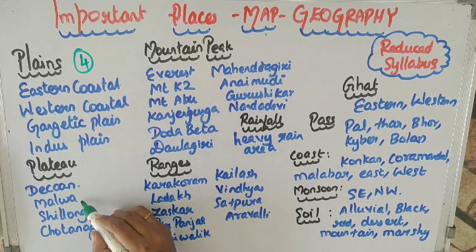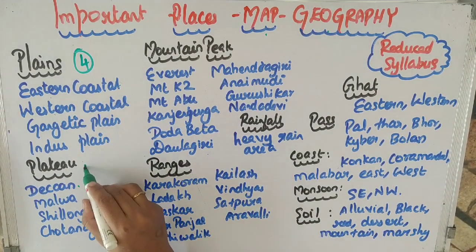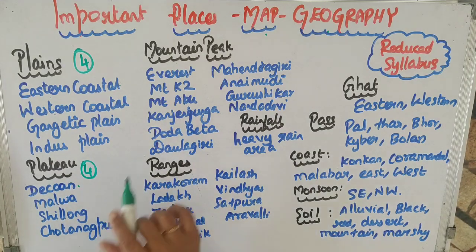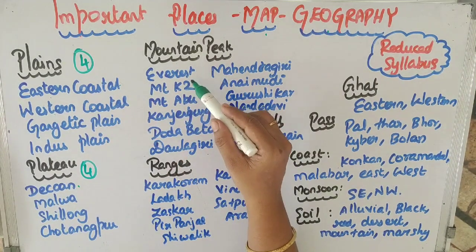There are 4 Plates: Deccan Plate, Malwa Plate, Shillong, and Chotanakpur.